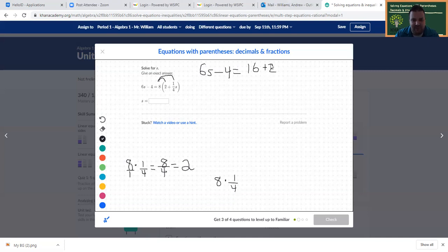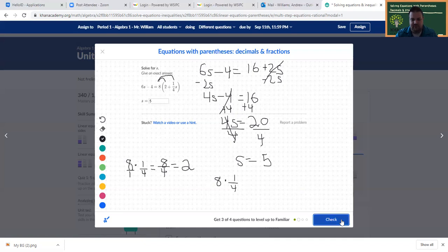So 8 times 1 fourth S, that is going to be 2S. Now we have ourselves an equation with variables on both sides of the equation. We have constants on both sides of the equation. So what I'm going to do is I'm going to subtract 2S to get rid of it from this side. I end up with a 4S minus 4 equals 16. So now I have all my variables on the left-hand side. I'm going to want to get rid of this constant right here by doing the inverse operation. So I'll add 4 to both sides. 4S equals 20. And then I do the inverse operation of 4 times S. We're going to divide both sides by 4. And we get S equals 5 as our solution.